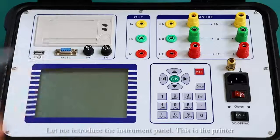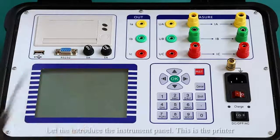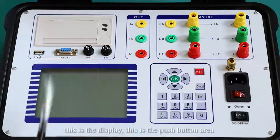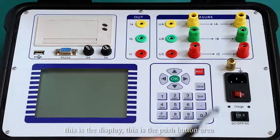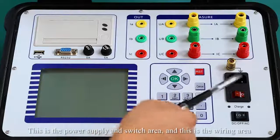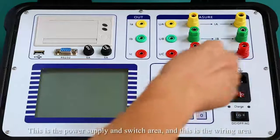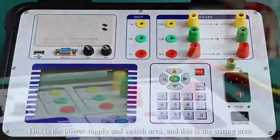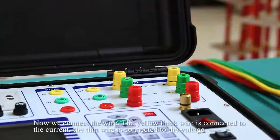Let me introduce the instrument panel. This is the printer. This is the display. This is the push button area. This is the power supply and switch area. And this is the wiring area. Now we connect the wires.